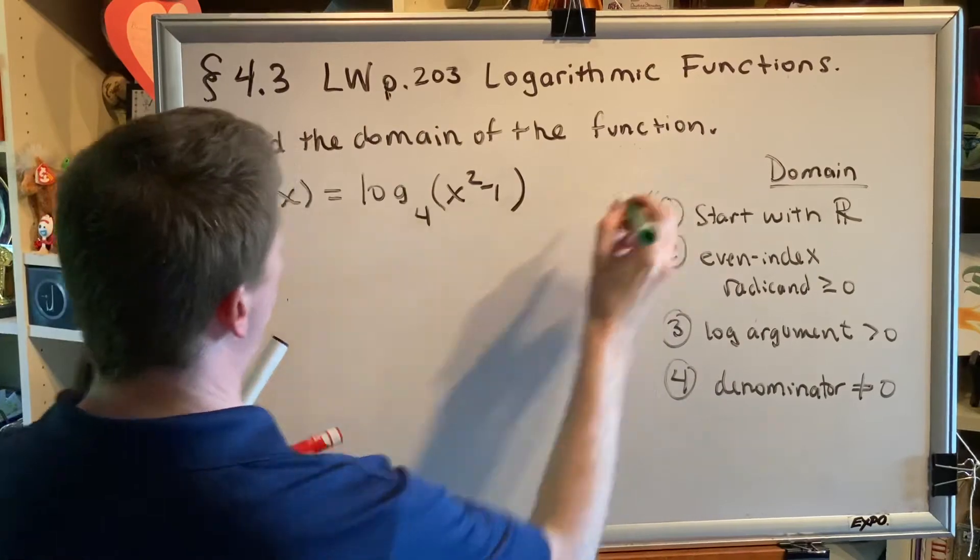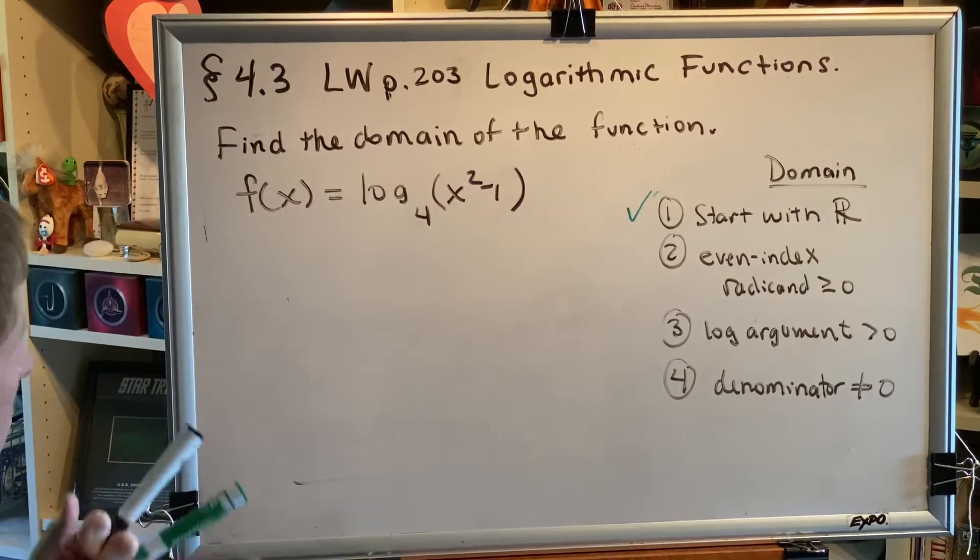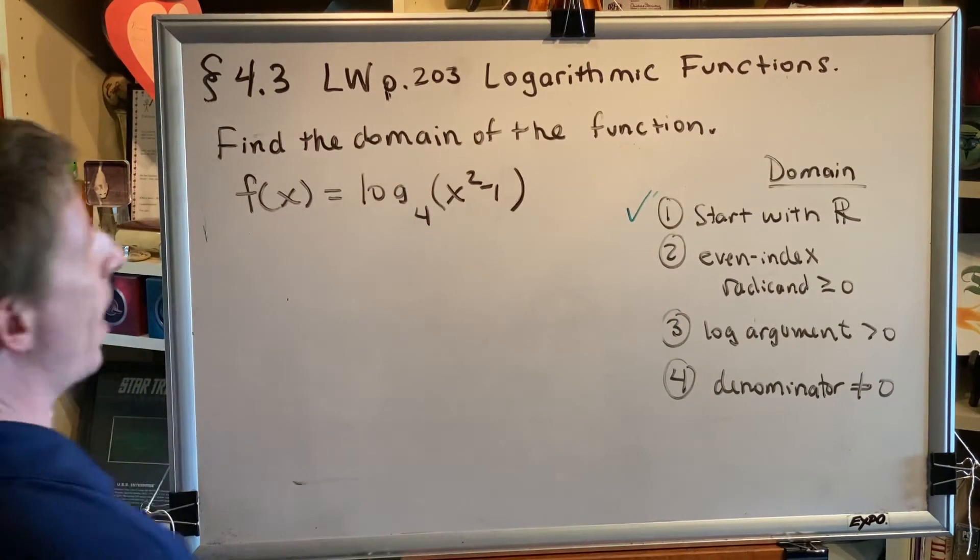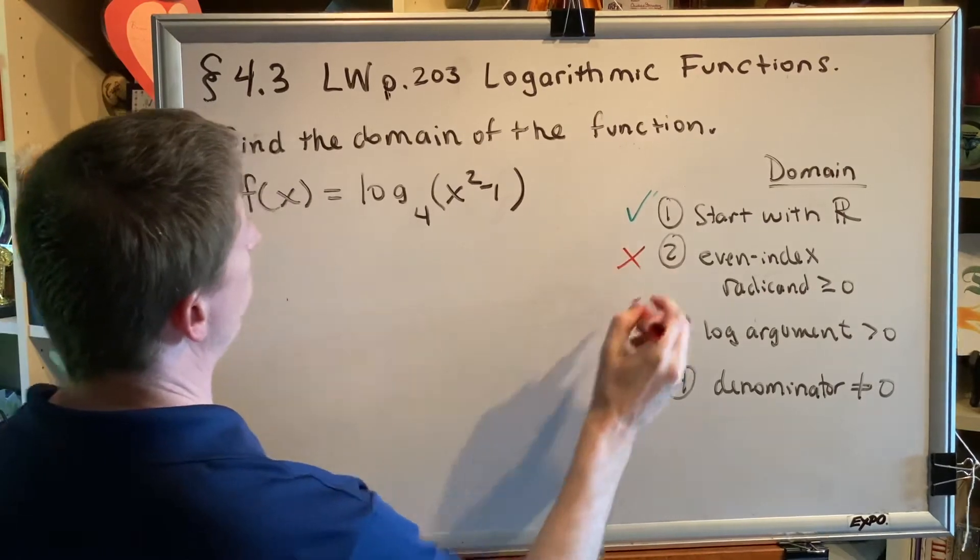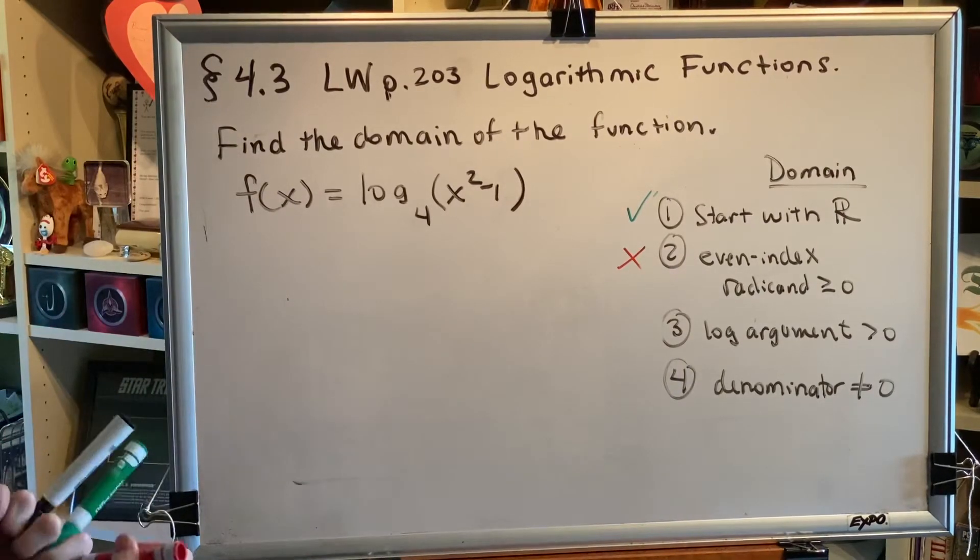Step 1, start with all real numbers. Great, done. Step 2, even index radicals—don't have any. So we can skip step 2.